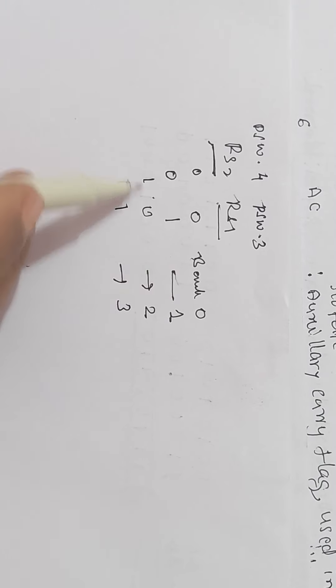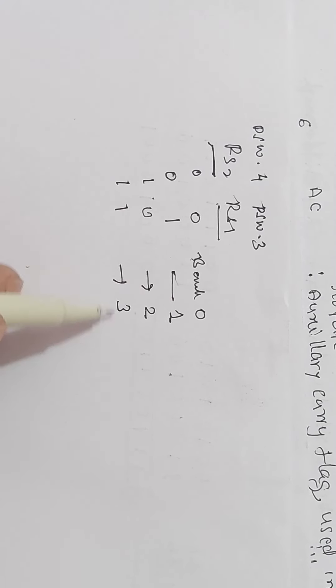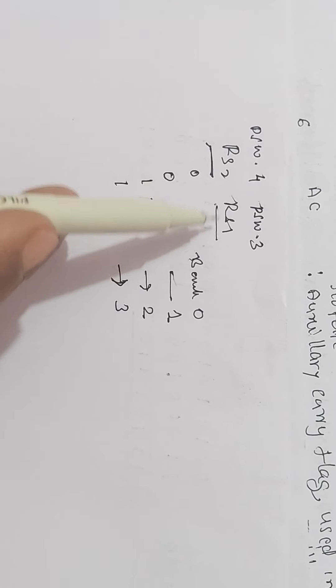00 is 0, 01 is 1, 10 is 2, 11 is 3, from binary conversion into decimal number. Therefore, the bits RS1 and RS2 of program status word are used to select the required bank.